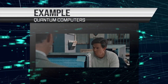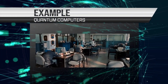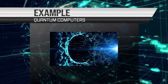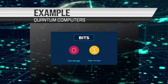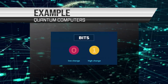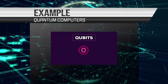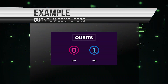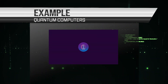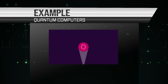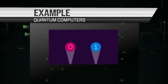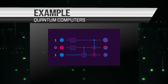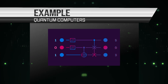One way to understand quantum computers is to consider the example of a classical computer, which uses bits to store and process information. A bit is a unit of information that can be either a zero or a one. Quantum computers, on the other hand, use quantum bits, or qubits, to store and process information. A qubit can be both a zero and a one at the same time, which is known as a quantum superposition. This allows quantum computers to perform multiple calculations at the same time, which makes them much faster than classical computers.